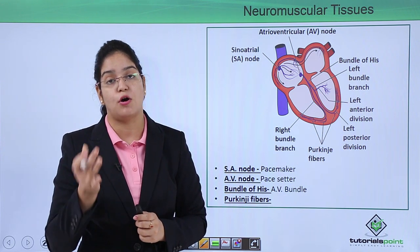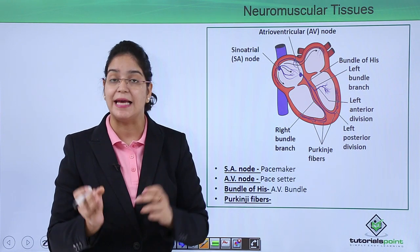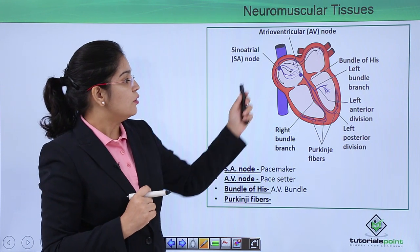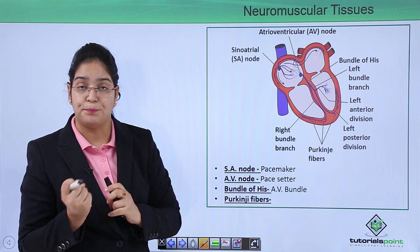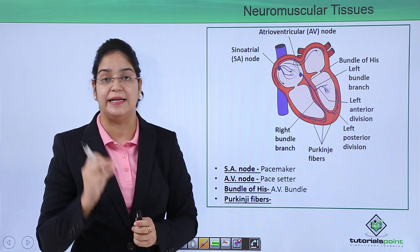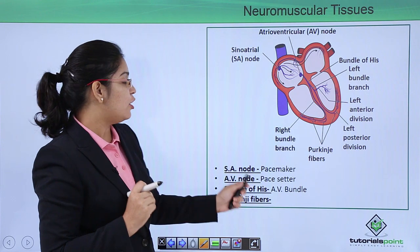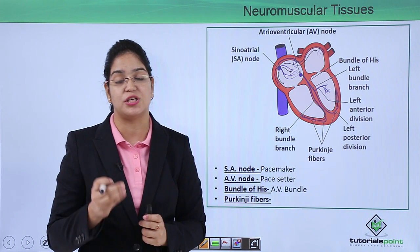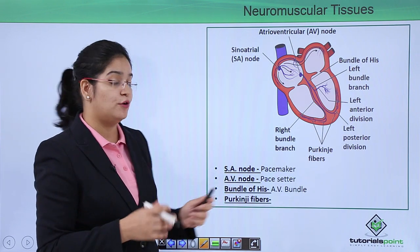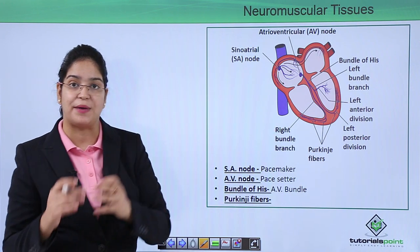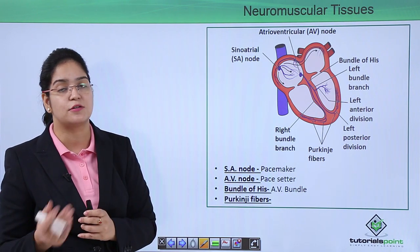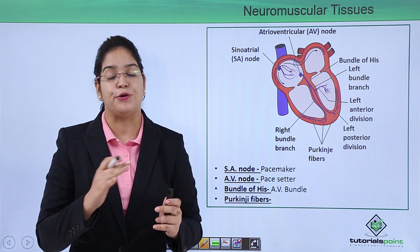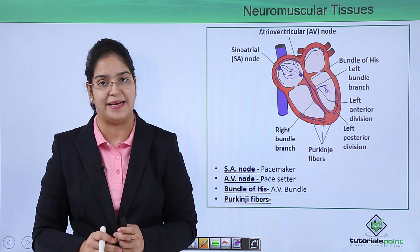The SA node is known as the pacemaker because it is the one which initiates the impulse and the heartbeat. The AV node picks up the impulse and is also sometimes called the pacemaker. The bundle of His comes from the AV node, which is why it is called the AV bundle. These are very frequent exam questions: why the SA node is called the pacemaker, why the AV node is called the pacemaker, and why the bundle of His is called the AV bundle. In this video, we have talked about the different neuromuscular tissues of our heart.